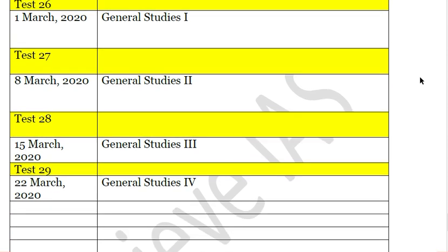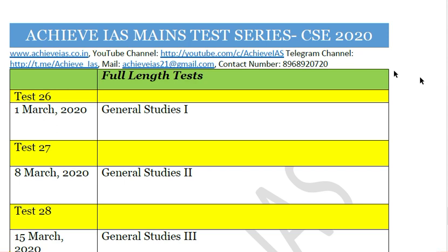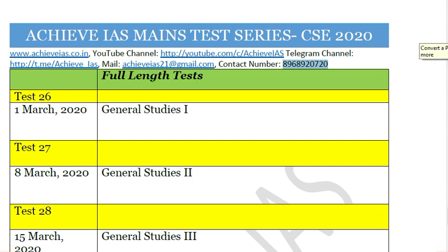If you are interested in joining our test series, you can contact us at 8968920720 or email us at achievers21@gmail.com. The email ID and contact number are also given in the description box. This test series was launched on the demand of students for CSE 2020. If you found this video helpful, please share it with your friends, like the video, and subscribe to our channel. Thank you, and have a very nice day.